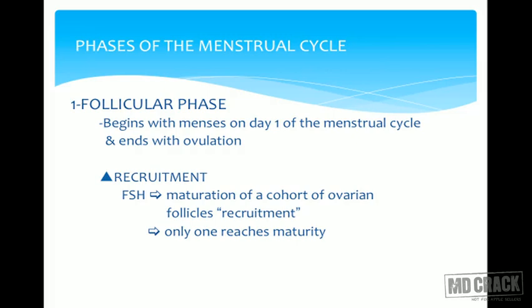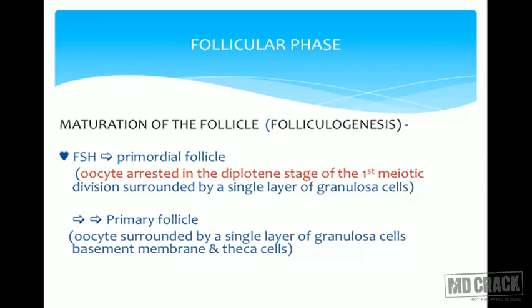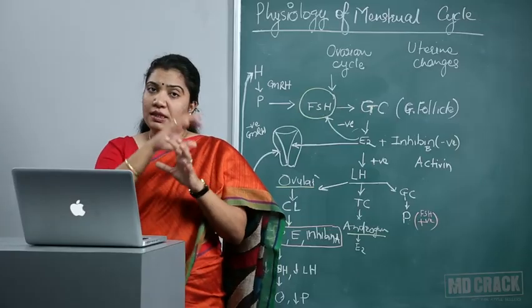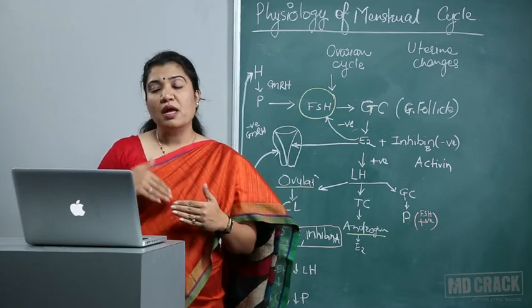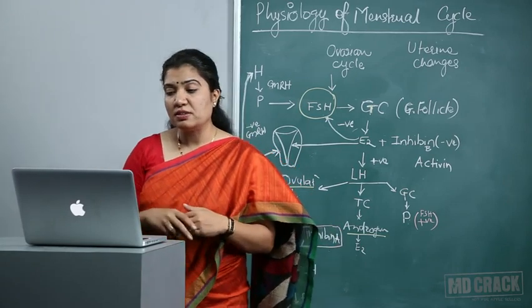The follicular phase begins with menses on day one of the menstrual cycle and ends with ovulation. There is recruitment of a dominant follicle from the cohort once FSH is secreted. FSH leads to maturation of the ovarian cohort follicle and recruitment. FSH selects the primordial follicle — the oocyte arrested in the diplotene stage of the first meiotic division. The oocyte in the primordial follicle is arrested in the first meiotic division and is surrounded by granulosa cells — the inner layer — and theca cells as the outer layer.